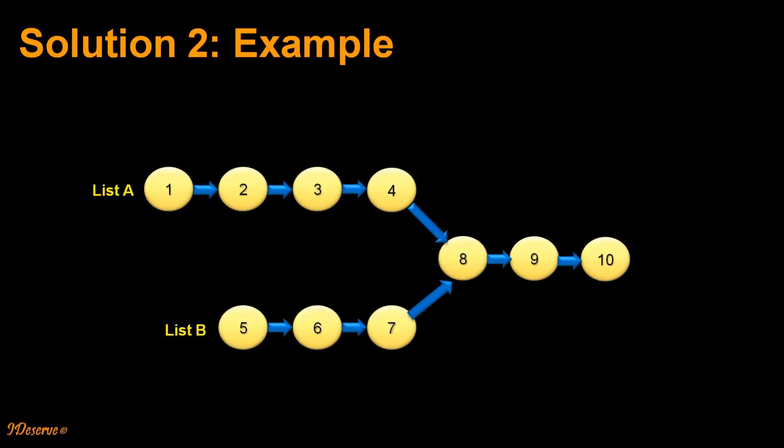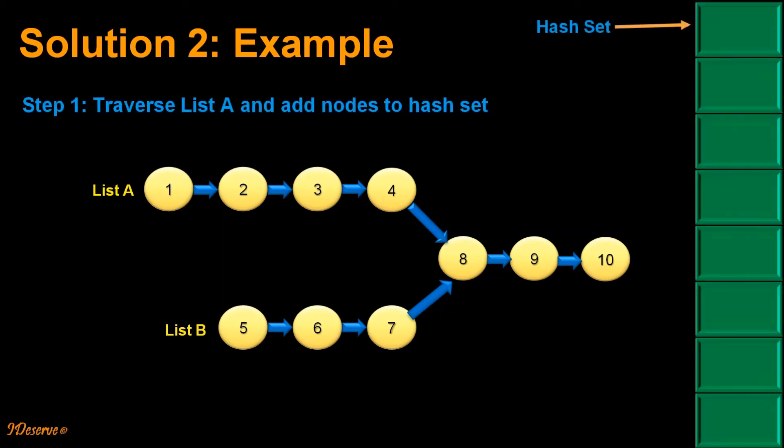Let us try to understand the problem through visualization. We will start with list A and add nodes to hash set. So we iterate over list A and we keep on adding elements to hash set.